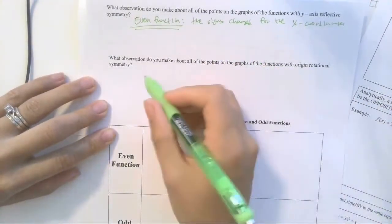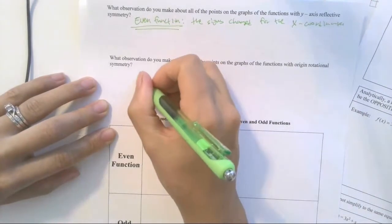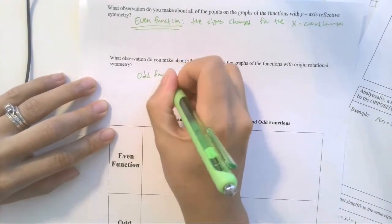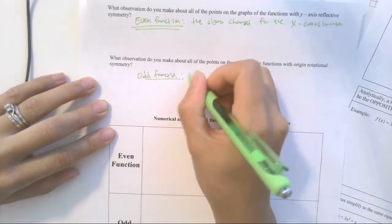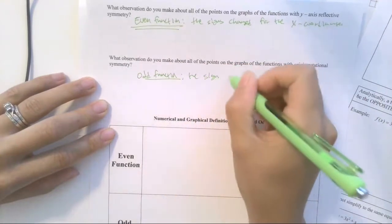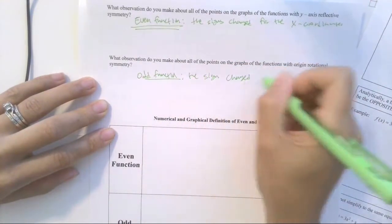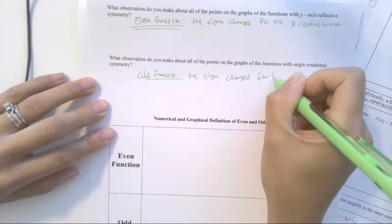What observation do you make about the origin rotation symmetry? In other words, what about odd function? The sign changes for both x and y coordinates.